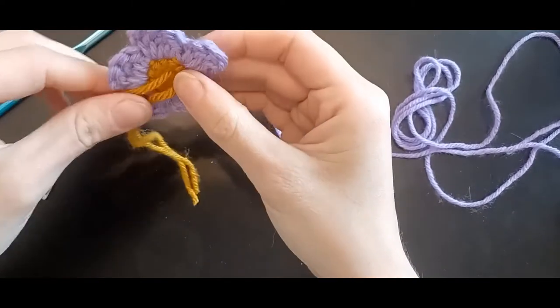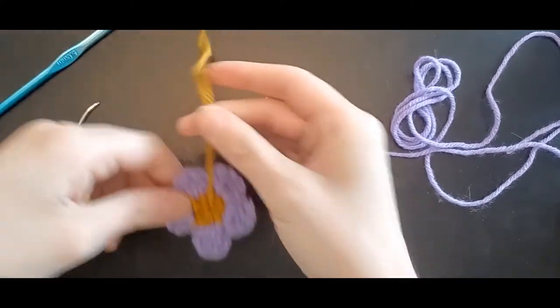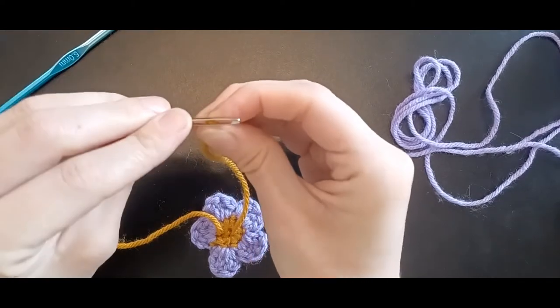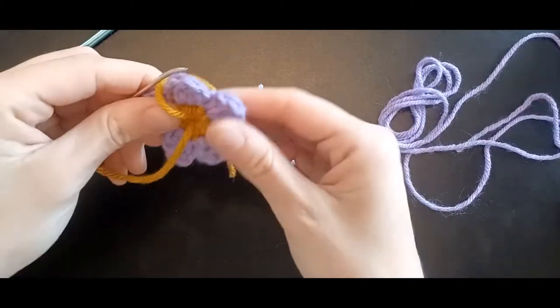Now the center ones are different. We want to make sure that they're run through and they're tight, but we don't want to cut them off because you're going to use them to attach them to whatever you're attaching this applique to.